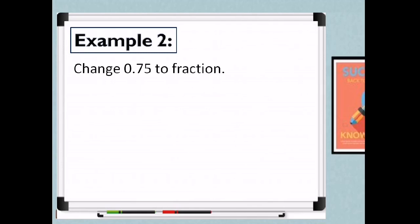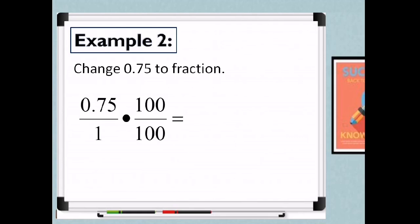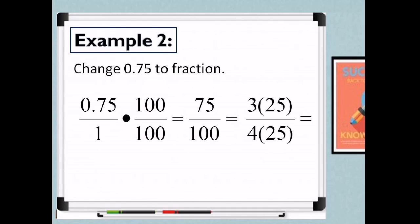Let's have another example. Change 0.75 to a fraction. That is hundredths, so we multiply the numerator and denominator by 100. That is 0.75 times 100 is 75, and 1 times 100 is 100. So we have 75 over 100. There is a common factor, so we find the greatest common factor to get the reduced form. The common factor is 25, so that is 3 times 25 over 4 times 25. Canceling 25, the lowest term of 75 over 100 is 3 fourths. So 0.75 in fraction is 3 fourths.